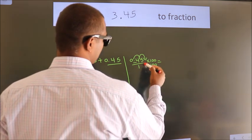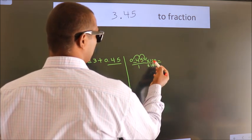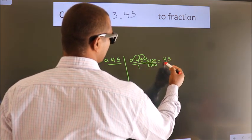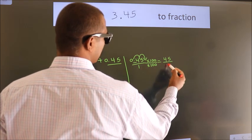Next, 0.45 into 100 equals 45. 1 into 100 equals 100.